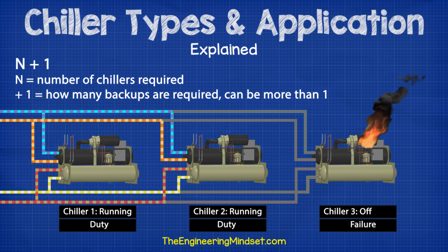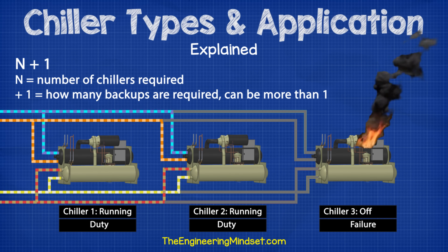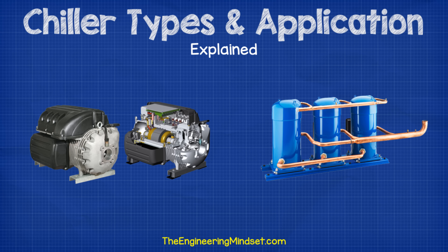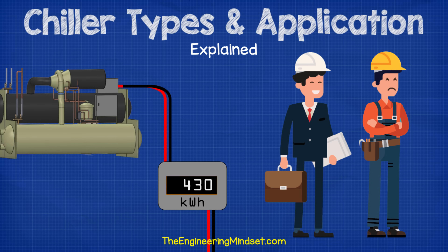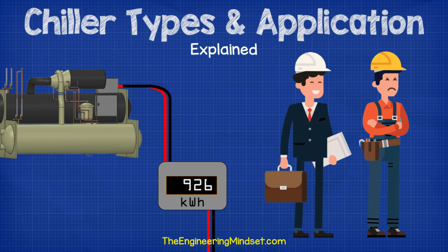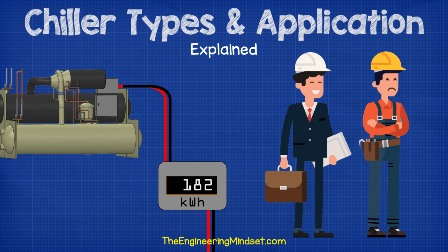In the event of a failure, you always have a backup ready to come online and handle the cooling load. You might need to use chillers with multiple compressors that can work independently, so that if one compressor fails, the chiller can still remain partly operational. Unfortunately, many building owners want the cheapest upfront option, but for a little extra, they could have bought a more efficient chiller which would be cheaper to operate — especially as chillers last around 15 to 25 plus years, so it would have paid for itself multiple times and resulted in reduced environmental emissions.